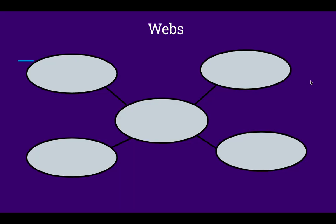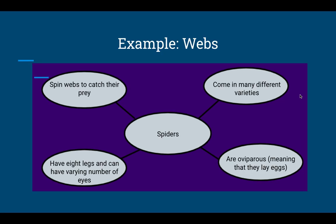The next graphic organizer that's very common and you're probably familiar with is a web. I really like webs because they're great for writing a paragraph — you put your main topic in the middle and all of your details go out to the sides. For example, the topic here is spiders. The outside details are: they come in many different varieties, they are oviparous meaning they lay eggs, they have eight legs and can have varying numbers of eyes, and they spin webs to catch their prey.